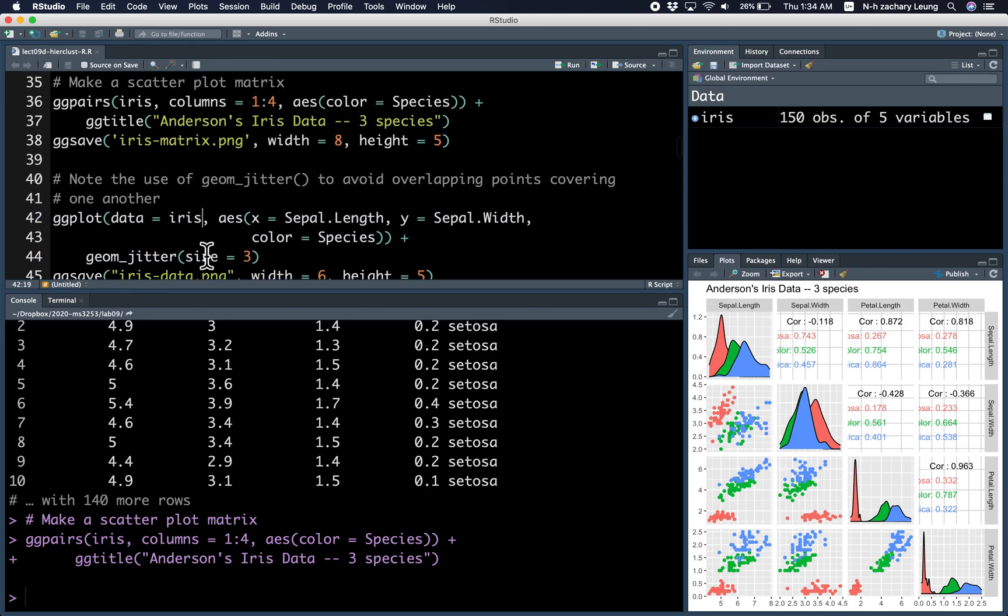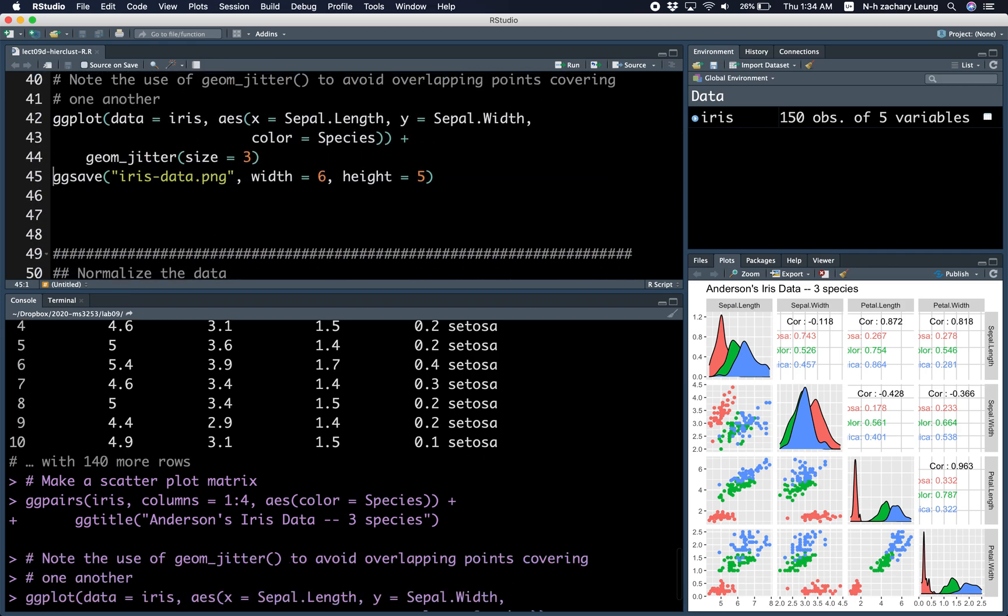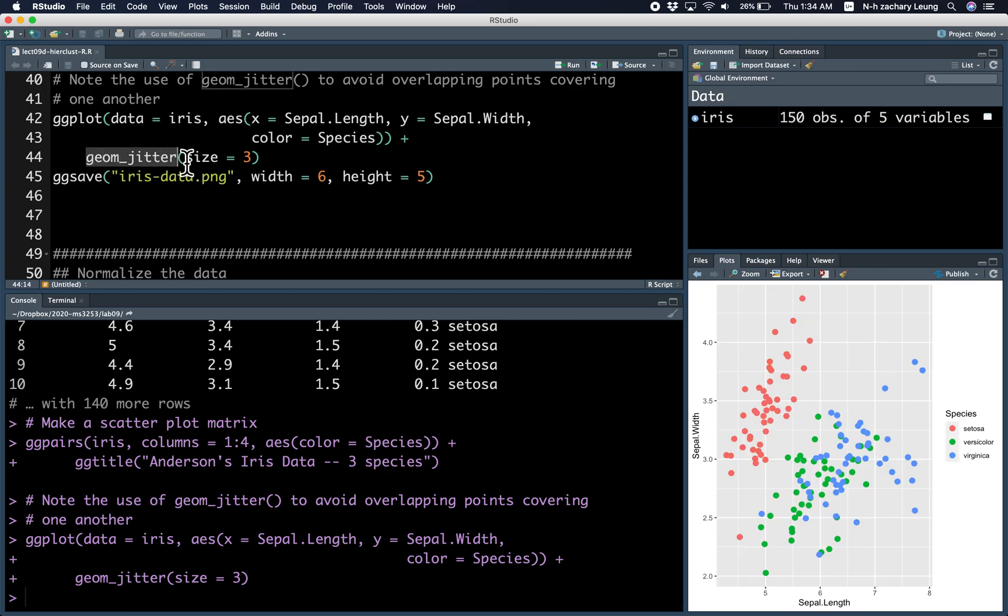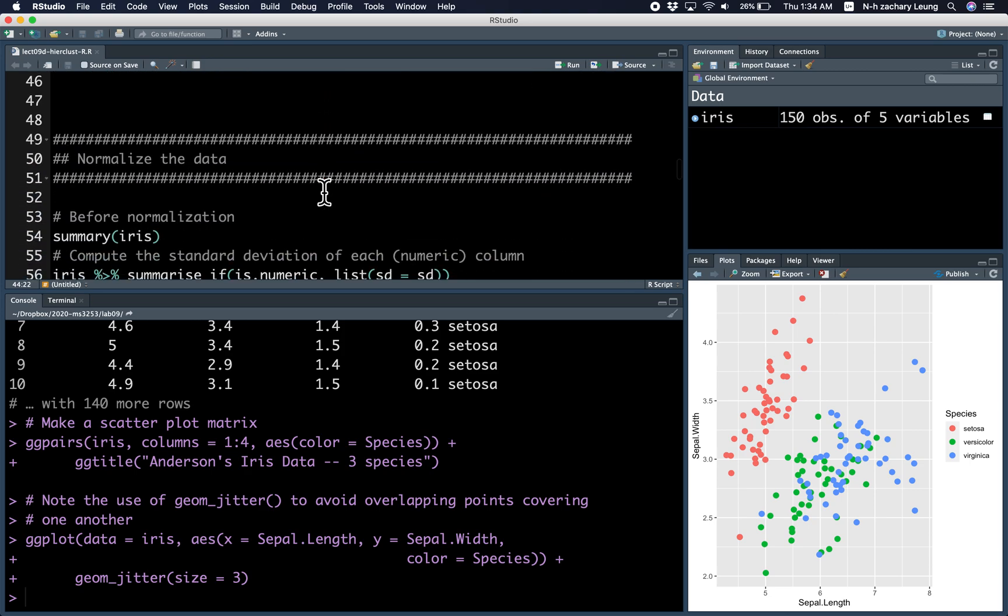And here's how you draw a jitter plot. It looks exactly the same as geom_point except you replace geom_point by geom_jitter. I wanted to make the points a little bit bigger so that when I write them to the file, it's easier for you guys to see.